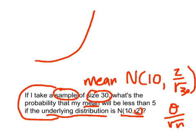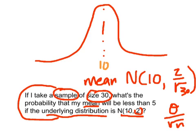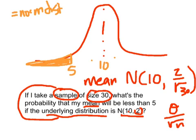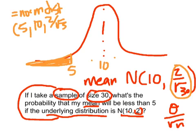So n is thirty and sigma is two. If we draw this picture, the mean is still ten but the standard deviation is now two divided by the square root of thirty — a smaller spread. We're still looking for the probability that the sample mean is less than five. We use: =NORMDIST(5, 10, 2/SQRT(30), 1). This again finds the probability — the area under the curve to the left of five.